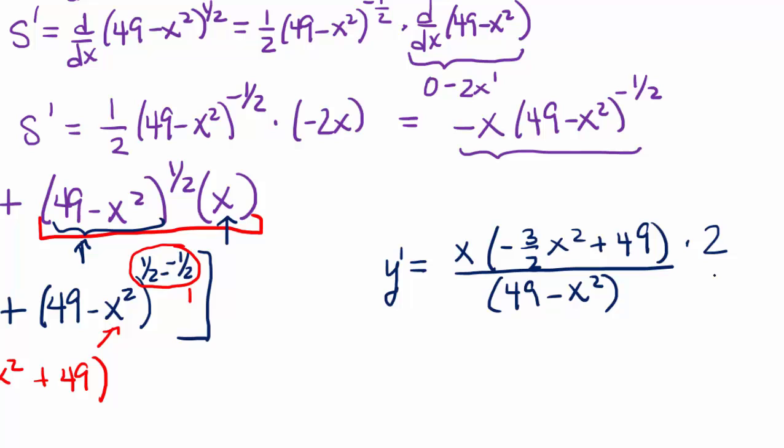I'm going to multiply by its denominator, which is two. And so we have y prime equals, instead of writing 2x, I'm going to leave it just x, I'm going to distribute the two inside the parentheses, leaving me with negative three x squared plus 98 over two times 49 minus x squared.